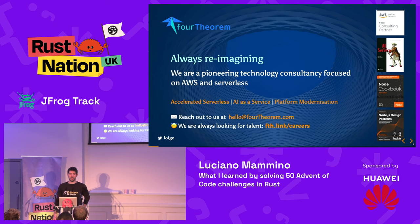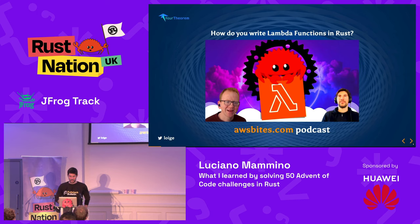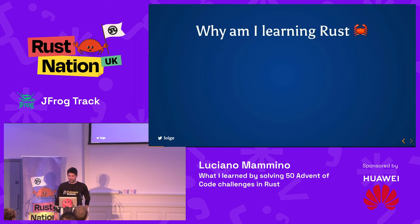I work for a company called Forteorem as a senior architect. We're a consulting company focused on cloud and AWS — we help companies migrate to the cloud or optimize their existing deployments. We're also starting to explore Rust. My CTO Owen Shanahi and I do a weekly podcast about AWS, and we recently published an episode about writing a Lambda in Rust.